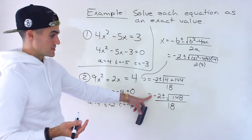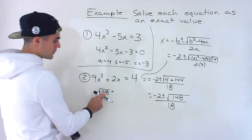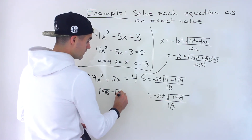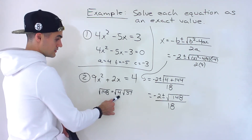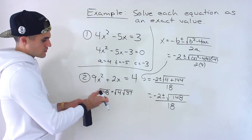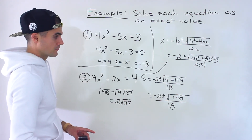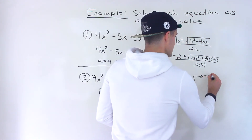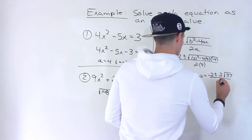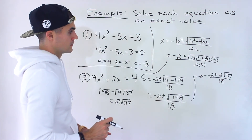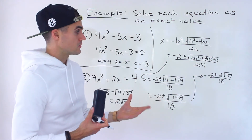In this case it simplifies because root 148 can be rewritten: 148 divided by four gives us 37, so we can rewrite it as root 4 times root 37. Root 4 simplifies to two, and root 37 can't be simplified any further. So we rewrite this as negative two plus or minus two root 37, all over 18. You can check: root 148 and two root 37 give the same decimal in your calculator.